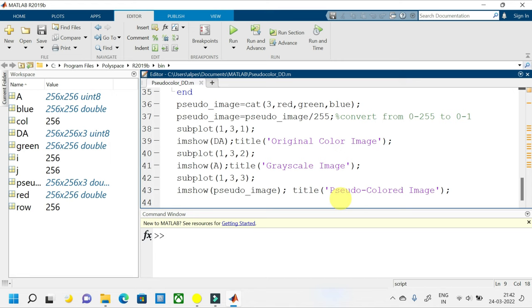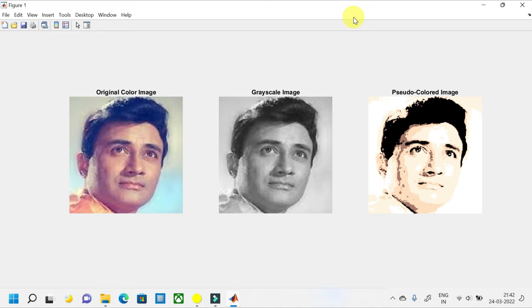Finally, I am plotting the original color image, the grayscale image, and the pseudocolored image side by side for comparison. Let us run the program and see the output. So you can see that the original color image is in full colors. The corresponding grayscale image is like this and the pseudocolored or false colored image which we have formed is like this.